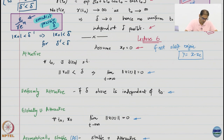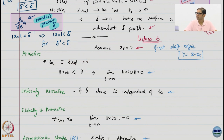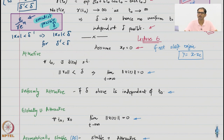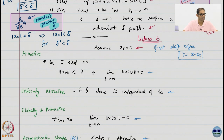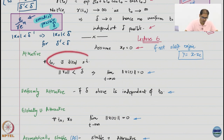We talk about the notion of attractivity now, because this is the next important notion. For all T0 there exists a delta — again possibly depending on T0 — such that if you are within a delta ball of the origin, then as t goes to infinity you approach the origin. This is a local definition because it says: given an initial time T0, I will give you a ball of certain radius within which you have to start. If you start beyond it we cannot guarantee anything.